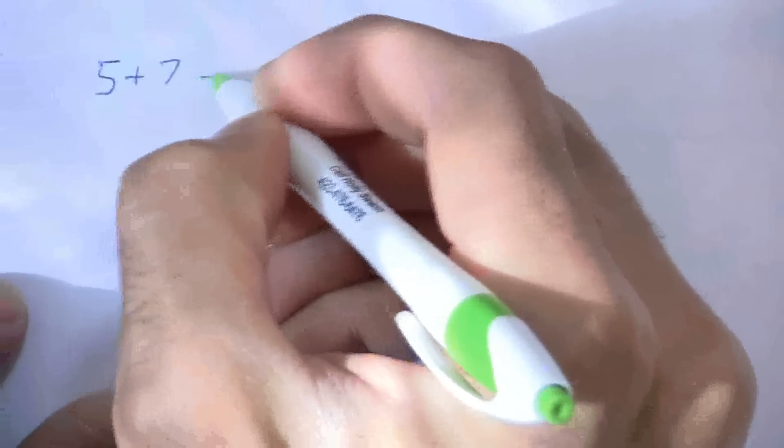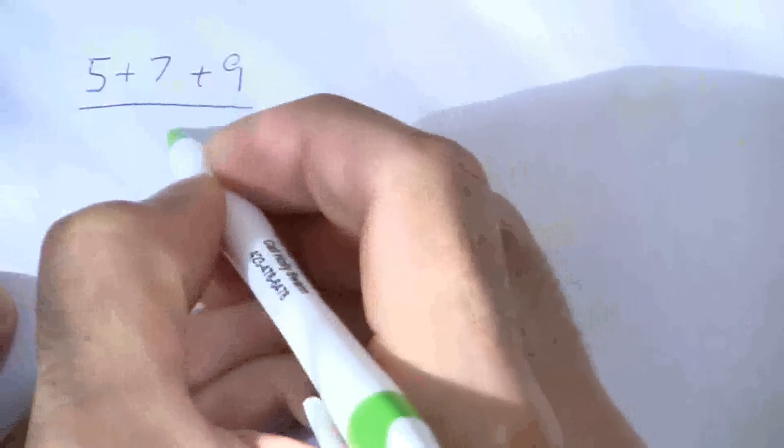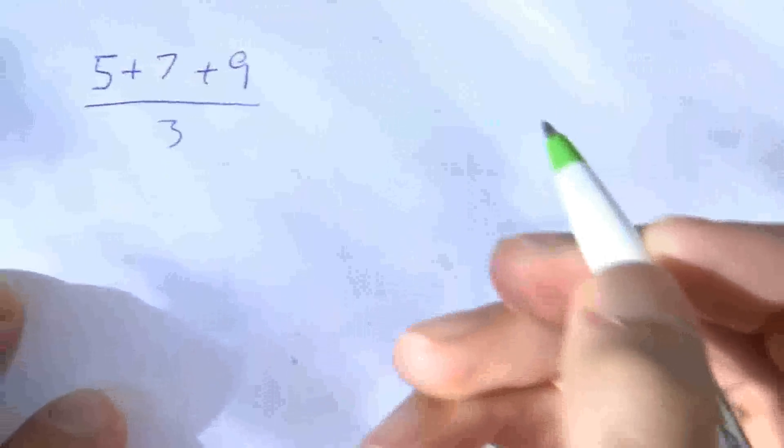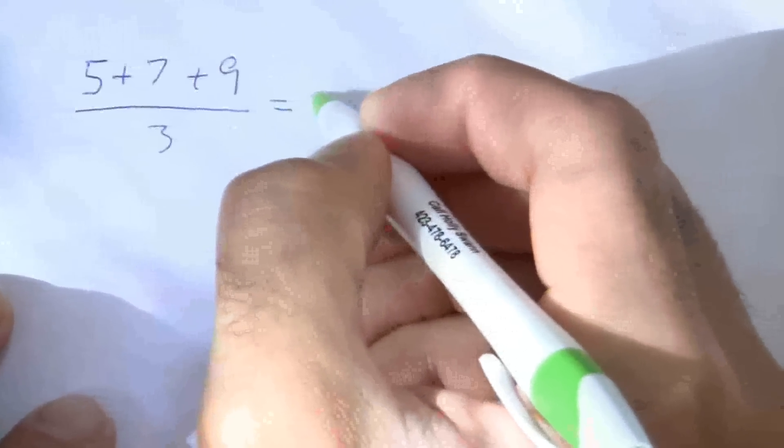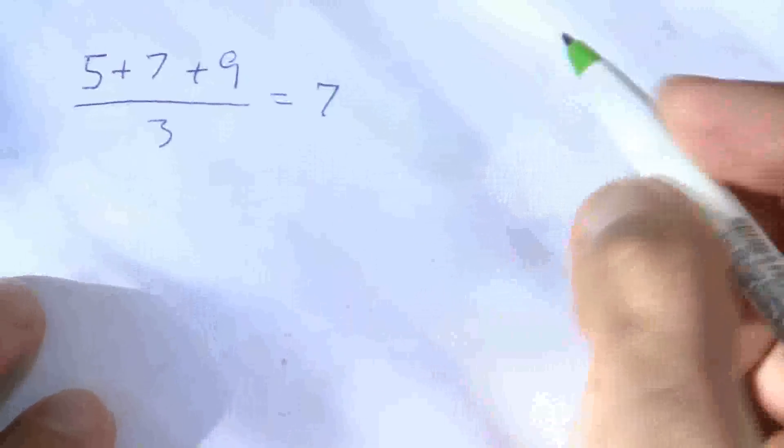Say we have 5 and 7 and 9. We want to average those. We sum them up and divide by the total number. And in this case that would give us 7.